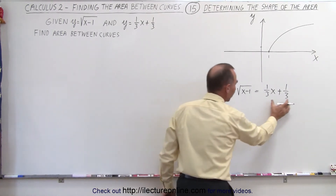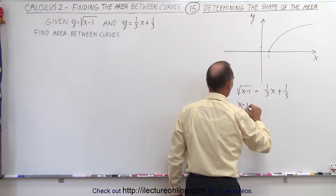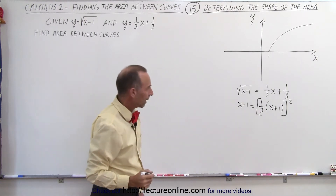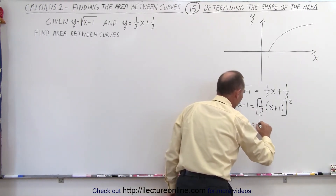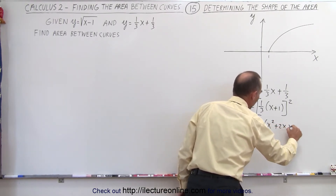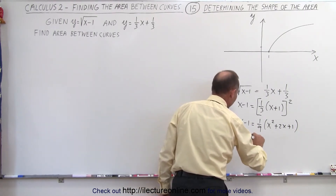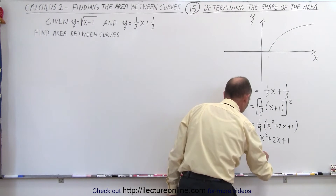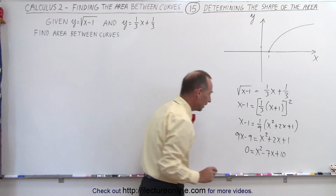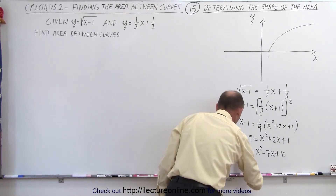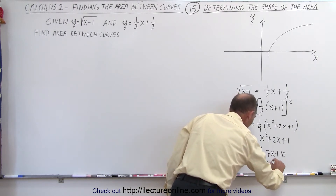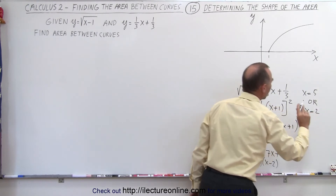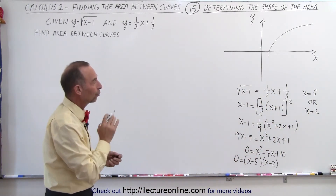We square both sides and factor out one-third, giving x minus 1 equals one-third times the quantity x plus 1, squared. Expanding the right side: x minus 1 equals one-ninth times (x squared plus 2x plus 1). Multiplying through by 9: 9x minus 9 equals x squared plus 2x plus 1. Rearranging: 0 equals x squared minus 7x plus 10, which factors as 0 equals (x minus 5)(x minus 2), giving x equals 5 or x equals 2.